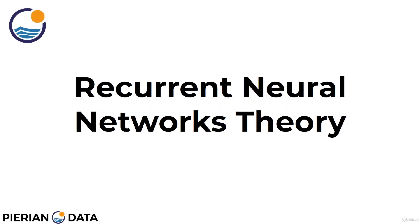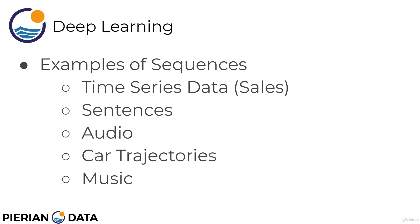Welcome back everyone. In this lecture, we're going to cover the basic theory behind a recurrent neural network. As we previously discussed, we're going to be using recurrent neural networks on sequence data, which we've seen can be anything like time series data, like historical sales information, sentences of words, even audio data, car trajectories, music, etc. Essentially, a sequence is just data that comes in a specific order.